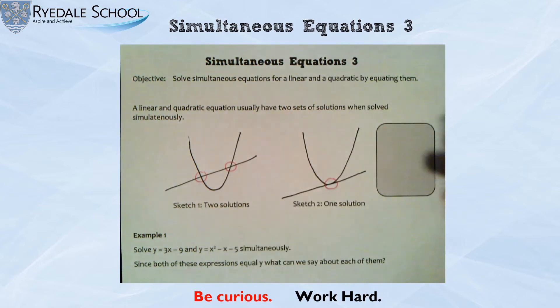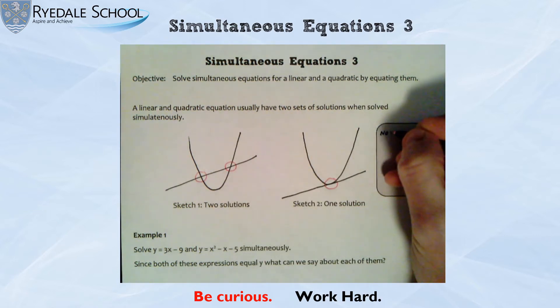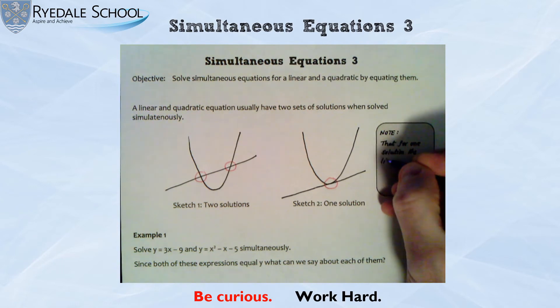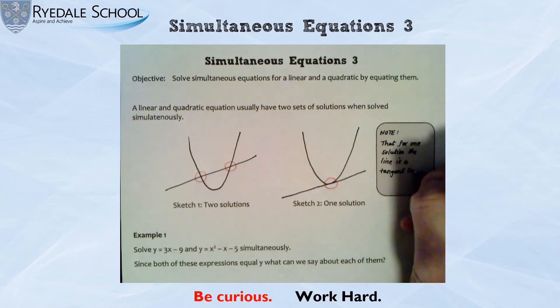Okay, I'm just going to put a little note here. Note that for one solution the line is a tangent to the curve.